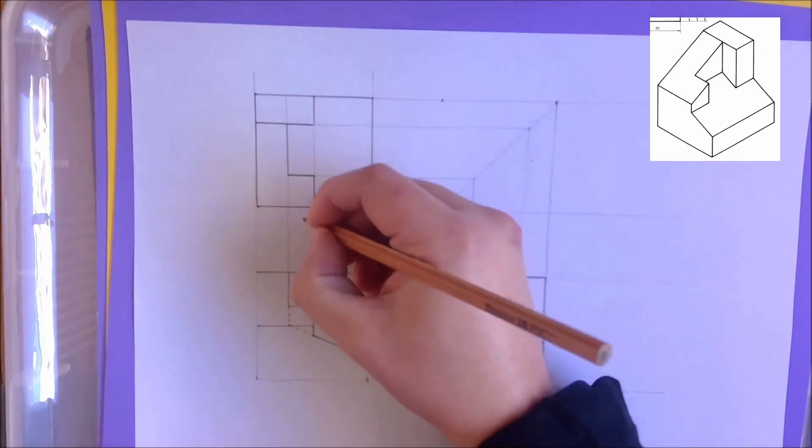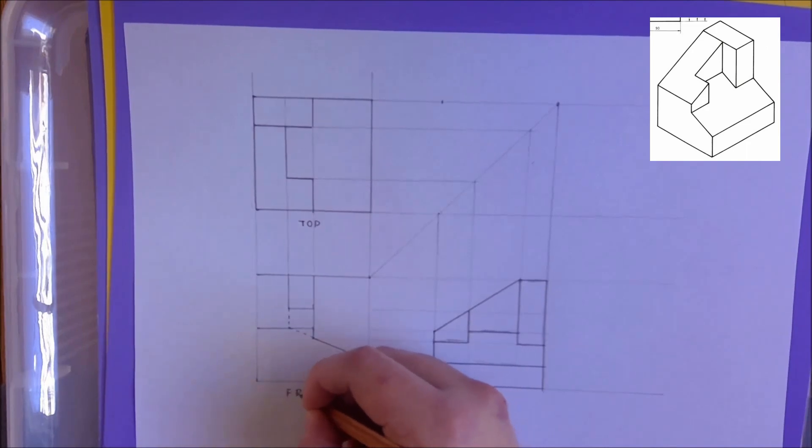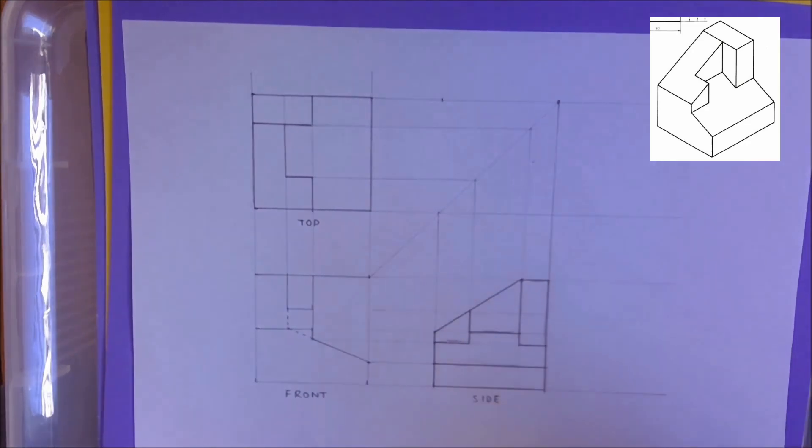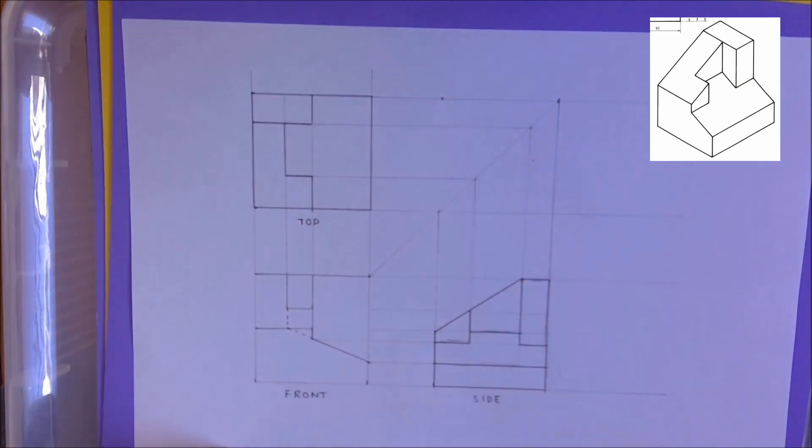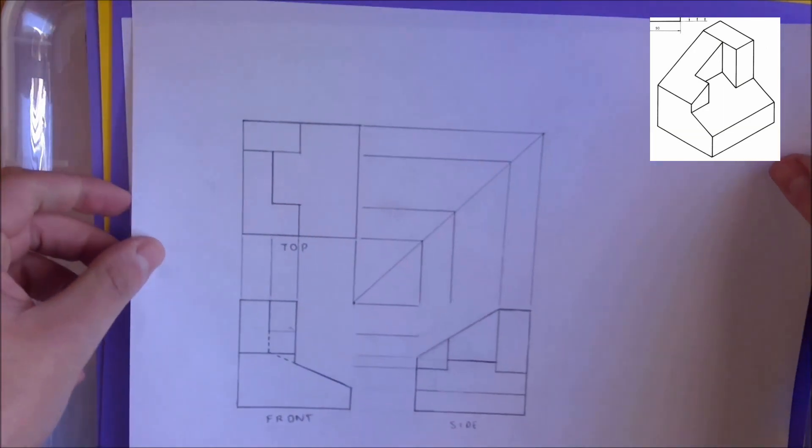What I would then do last is underneath, leave probably a half a centimeter gap. I will label my views: top, front, and side. I could then clean up all my line work to be really consistent. And then we will end up looking something like this.